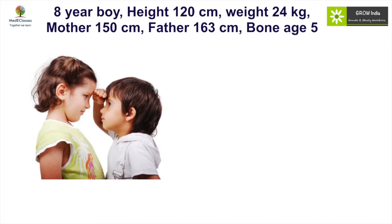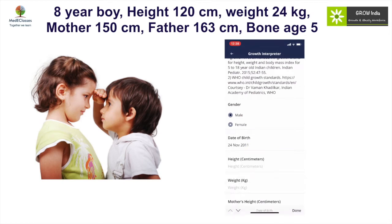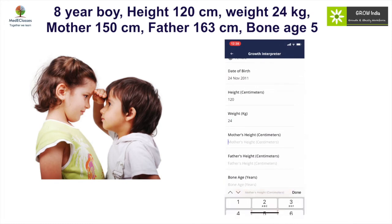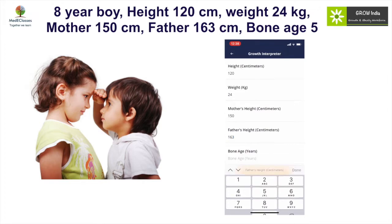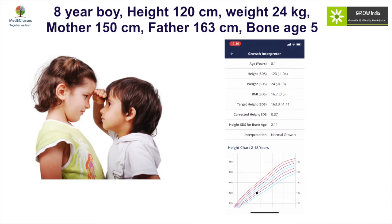For example, we have an eight-year-old boy with a height of 120 centimeters and weight of 24 kg. All we need to do is place all these important data — date of birth, weight, mother's height, father's height — and once we put that data along with the bone age, which can be calculated through our bone age app, we will get a number of outputs: age, height SDS, weight SDS, and BMI SDS.